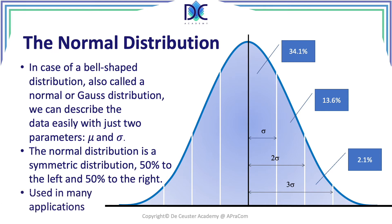This distribution is used in many applications. We find a lot of events and elements showing a normal distribution — for example, the distribution of the intelligence coefficient. Also very important in operations management and sampling: whenever we start sampling from a distribution, whatever the original distribution of the population is, the sampling distribution of the sample averages is in fact a normal distribution.